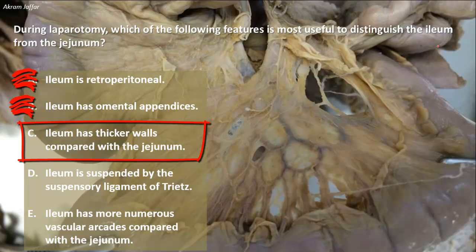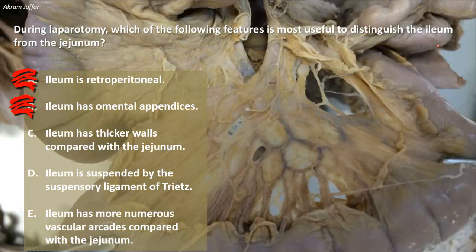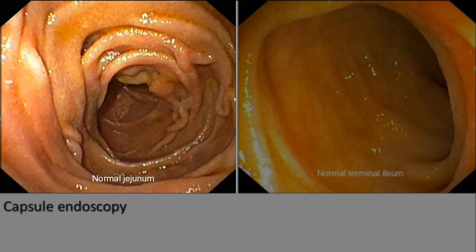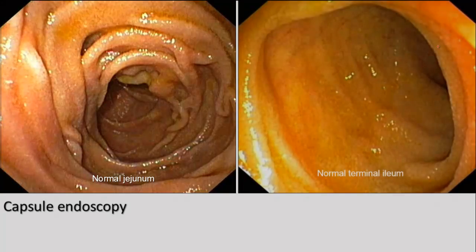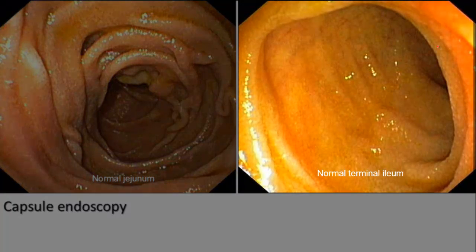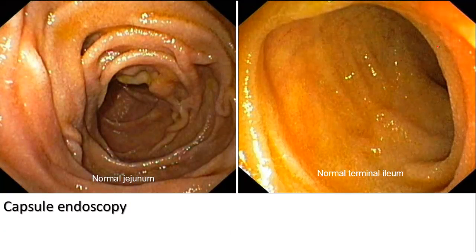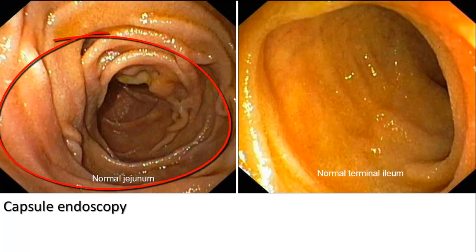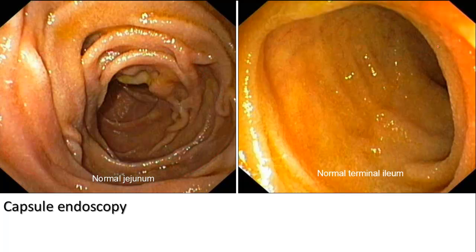The ileum has thicker walls compared with the jejunum — in fact, the ileum has thinner walls compared with the jejunum, and this can be felt during surgery. The jejunum is thicker than the ileum because the mucosa of the jejunum is more folded. You can see here the plicae circulares in a capsule endoscopy — they are more numerous in the jejunum while becoming less numerous in the ileum, with a gradual reduction in density. Because of the extensive plicae circulares, the jejunum becomes thick, and the mucous membrane can be felt through the muscle wall during surgery, like a shirt sleeve felt through a coat sleeve.